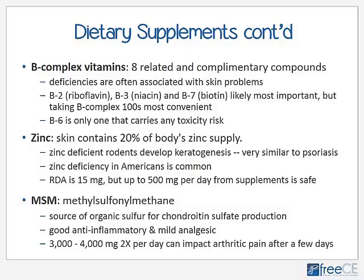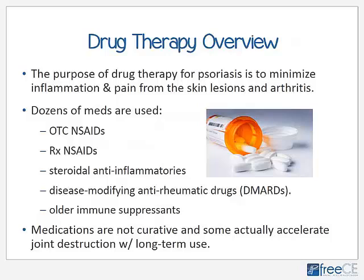MSM, standing for methylsulfonylmethane, is a very good source of organic sulfur, helpful for the skin and other soft tissues and joint issues. It is needed for chondroitin sulfate production in the joints, so MSM is good not only for global inflammation but is quite helpful for any type of arthritis. It is also a mild analgesic. Dosage of three to four thousand milligrams twice per day can make a very good impact on arthritic pain and may also help with skin inflammation and plaques.